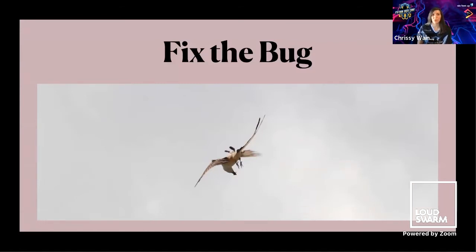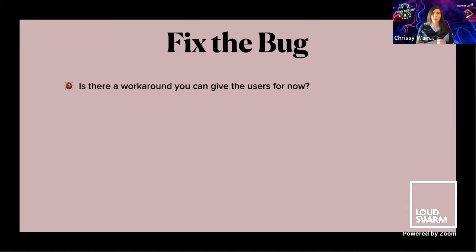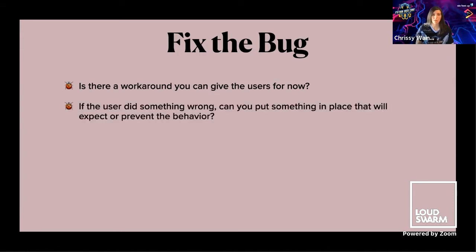Once you figure out what the cause of the bug is, the next step is to fix it. You have an idea of how you're going to fix the bug, but it's not always easy to do a quick code fix you can release right away. Think about whether there's a workaround you can give users for now, or an immediate help while you're working on the full fix. If the user did something wrong in how they entered data, consider including that behavior in your fix so it prevents the actual error from happening. It's best to put fixes in the code rather than expecting users to do things the right way.